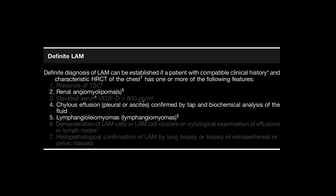The three imaging features are: renal angiomyolipomas, chylous effusions, and lymphangioliomyomas. Renal AMLs appear as low-density fatty lesions in the kidney. A lymphangioliomyoma is also usually a low-density lesion in the retroperitoneum — I'll show examples of both. Chylous effusions on imaging will usually look no different than simple transudative pleural effusions; it's very rare to see macroscopic fat, but it's something you can suggest on CT.